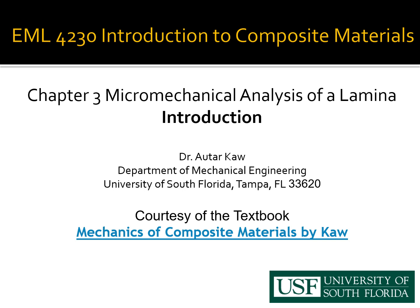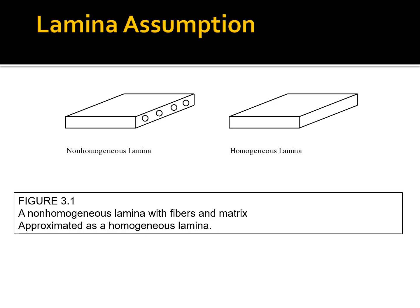So let's look at what the assumptions are. As you can see from the picture on the left, we have a non-homogeneous lamina. That means that at every place the properties will be different - you have a fiber here, you have a matrix here, you have a fiber here, you have a matrix here. So this is a non-homogeneous lamina.